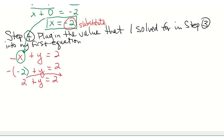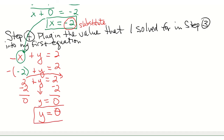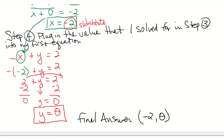I want to get that 2 over to the other side, so I'm going to subtract 2 from both sides. Bring down my y — 2 minus 2 is 0 — so that tells me that y equals 0. So now I have values for both x and my y. My final answer is going to be minus 2 and 0. You have your x value calculated in step 3 and your y value calculated in step 4.